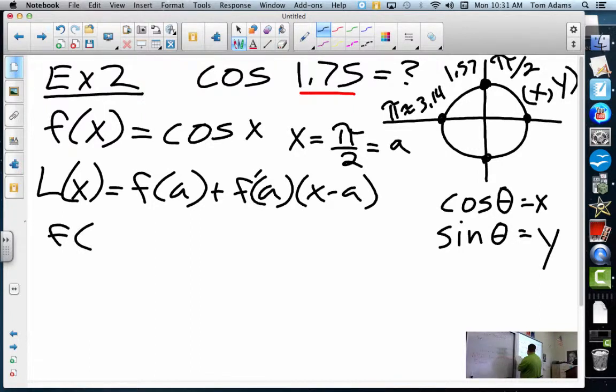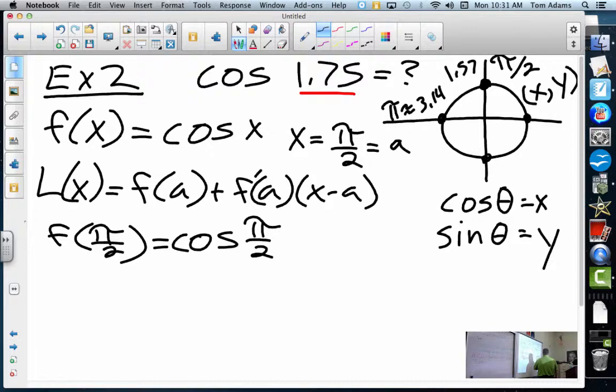So f(π/2) is equal to cosine of π/2, and I could do that using the unit circle. Because the point right here at π/2, this point right here is 0 comma 1 on the unit circle, and we said the cosine was the x value, so that's 0. So that's done, check it off the list.